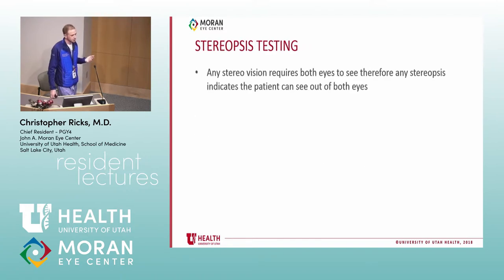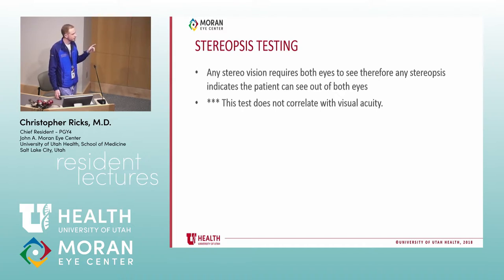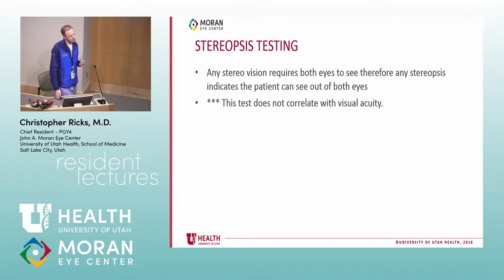Stereopsis testing: to have stereovision, you need both eyes. So if they have any stereopsis, they are seeing out of both eyes. One note: there are tables correlating how much stereopsis a patient has to actual visual acuity, but the correlation isn't great. You can't definitively say they have 20X vision based on stereopsis arc-seconds — just keep that in mind.